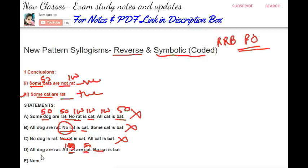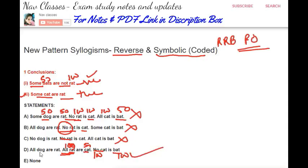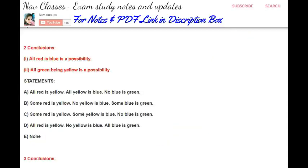Looking at the first conclusion again — we need a relation between rat and bat, with cat as the common term. Can they be merged? Yes. Can bat give 50 out of 100? Yes. Can rat give 100 out of 100? Yes. So this conclusion is also following from this statement. We can clearly say that statement D is the answer here.